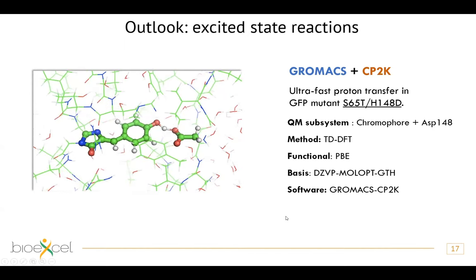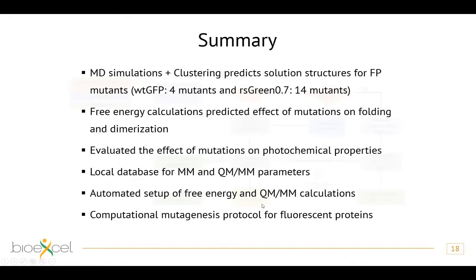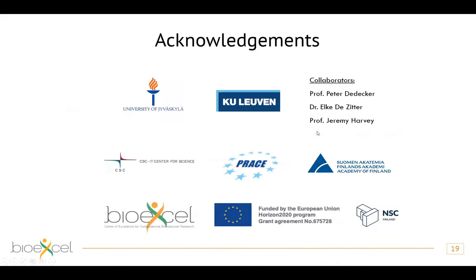In summary, the FluProCUT workflow can predict structures of unknown mutants, predict thermodynamic properties without experiments, evaluate photochemical properties, and provides a database of force field and QM/MM parameters for several chromophores. It represents a full in silico mutagenesis protocol for simulating fluorescent proteins. Acknowledgements to our collaborators in BioExcel and the European Horizon program.